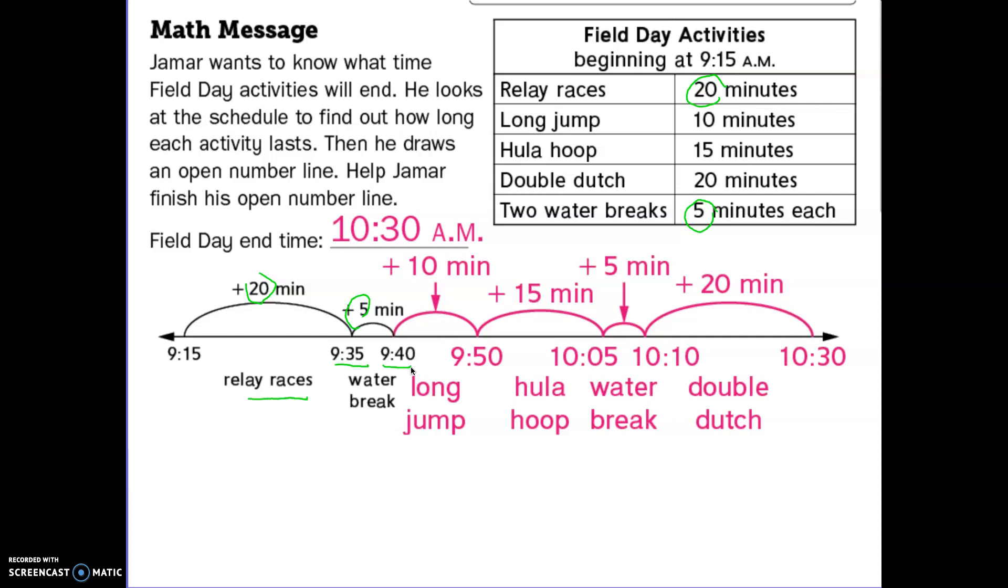This is how I solved it. You may not have put your events in this order. I did them in order of the schedule and put a water break where I felt it would be necessary. The next event would be the long jump, that's 10 minutes, so I added that to my 9:40 and I've got 9:50. Then the hula hoops are 15 minutes long, so I make a hump and do plus 15. I can use my clock, so 9:50 plus 15 minutes is 10:05.